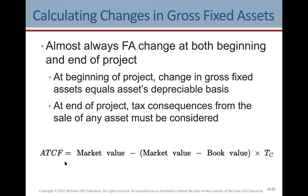At the end of the project, tax consequences from the sale of any asset must be considered. The after-tax cash flow formula is: market value minus (market value minus book value) multiplied by the tax rate. The book value is what appears in your accounting records after applying depreciation. You must follow the order of operations — do what's in brackets first, then multiplication, then addition and subtraction — otherwise your calculations will be wrong. Do what's in the brackets first, multiply by the tax rate, then subtract from the market value.